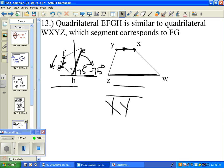The segment which corresponds to FG on the larger trapezoid would be XY. XY is the right answer here. And XY happens to correspond with letter D. Letter D on our answer sheet.